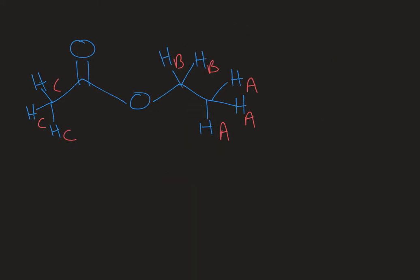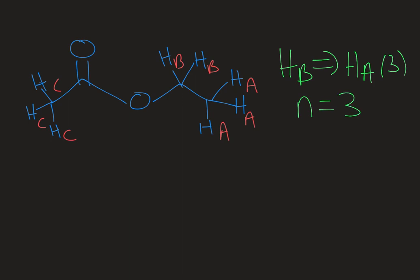Splitting is reciprocal — if HA is being split by HB, then HB is going to be split by HA. Looking at HB, the neighboring carbon has three HAs on it. So N equals 3, and 3 plus 1 equals 4. This is called a quartet.